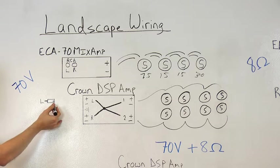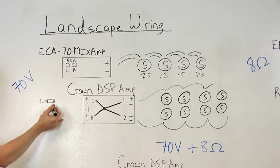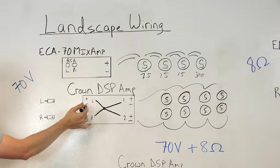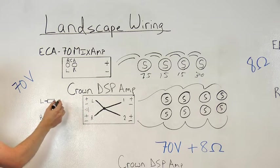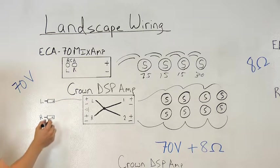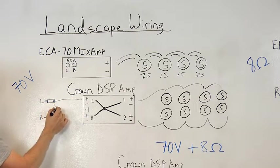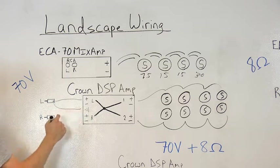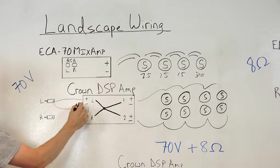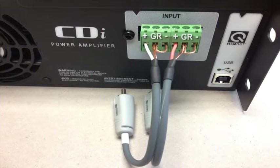The question is how do we take an unbalanced RCA which is just positive and ground and connect it to the balanced connection of the Crown amp which is positive, negative and ground? Well, you simply take the tip which is positive and connect it to the positive side of the Crown amp, take the shield which is connected to the shell of the RCA and run it to the ground, and then take the ground and make a jumper to the negative. Here's a picture of it done properly.